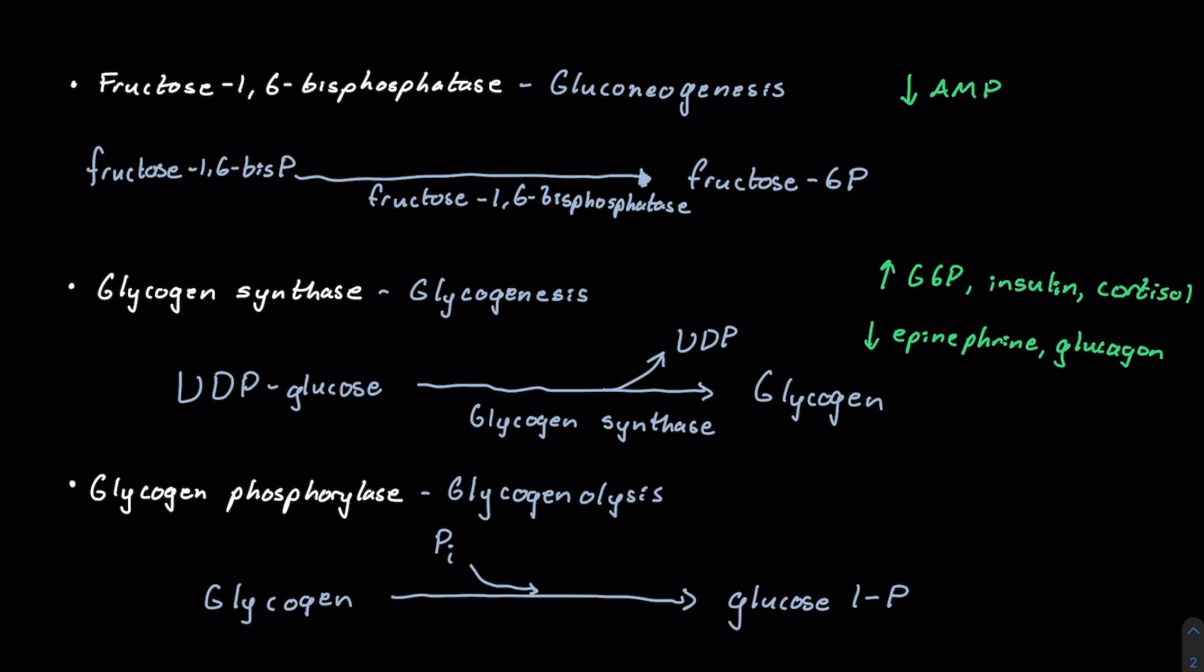Now, if we take a look at glycogen phosphorylase, we'll see sort of the opposite here. It will be upregulated by epinephrine, glucagon, and adenosine monophosphate, whereas it will be downregulated by glucose-6-phosphate, insulin, and ATP.